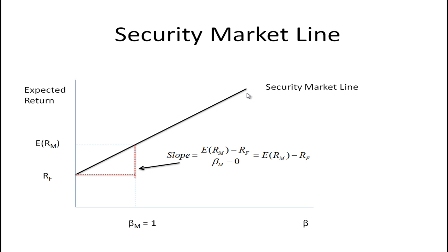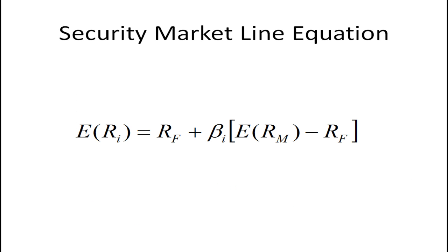If we look at this line, we can get the equation by first finding the slope. The slope is rise over run: the rise is the expected return of the market minus the risk-free rate. The run is beta for the market minus 0, and since beta for the market equals 1, the slope is simply the expected return of the market minus the risk-free rate. So the equation for the security market line is: the expected return for asset i equals the risk-free rate plus beta i times the difference between the expected return of the market and the risk-free rate.